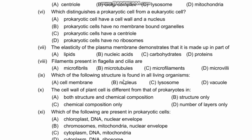Question 9: Which of the following structure is found in all organisms — meaning in both prokaryotic and eukaryotic cells? Options are cell membrane, nucleus, lysosome, and vacuole. Nucleus is double membrane-bound, while lysosome and vacuole are single membrane-bound. Prokaryotic cells have no membrane-bound organelles, but cell membrane is present in both prokaryotic and eukaryotic cells. So our right option is A.